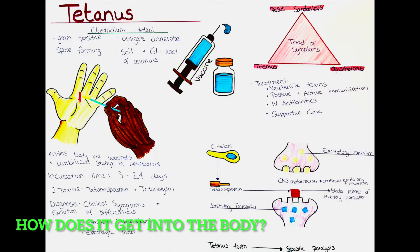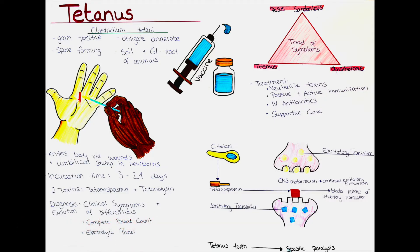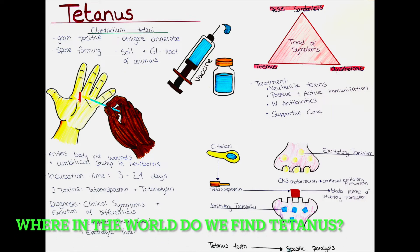The bacterium enters the body through wounds, burns, or the umbilical stump of newborns. Any breach of the skin is a potential entry for the bacteria. However, deep wounds with anaerobic conditions provide the most favorable environment for multiplication of the bacteria.